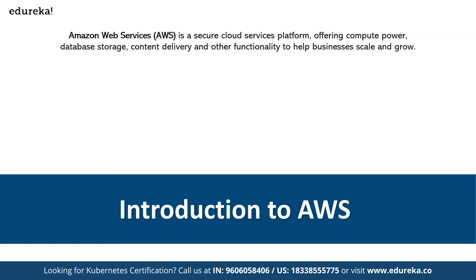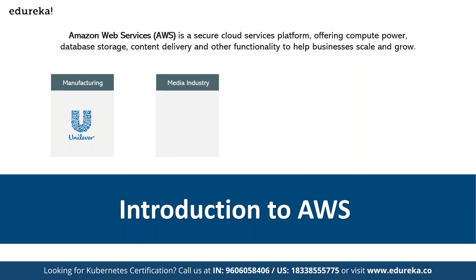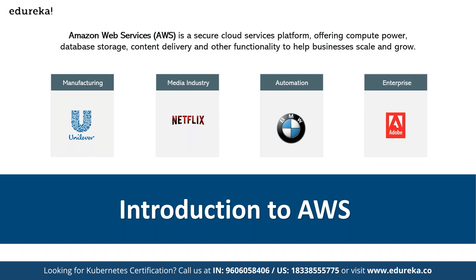AWS holds the highest market share with around 39% of the overall cloud computing market. It helps organizations from different lines of business scale, grow, and automate solutions, making infrastructure more efficient and performance-effective. Top names using AWS include Unilever, Netflix, BMW, Adobe, and virtually any Fortune 500 organization. Even the US government has a dedicated AWS private cloud.